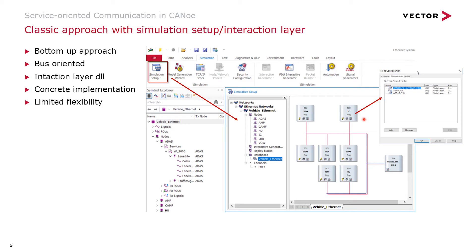But we came to a point where this no longer works for things like MQTT. So we said: let's do it exactly the other way around. Let's start with a top-down approach where the application and its interfaces are in focus — this is something we see much more in the future. So we created the so-called communication setup. You see participants here — a participant is comparable to an ECU, but not necessarily. The focus is on the ADAS participant communicating with other participants. There are always endpoints, and in between the endpoints there is something called a communication object. Participants can take on different roles: either consumer or provider of an interface.